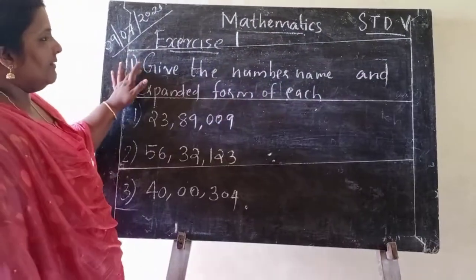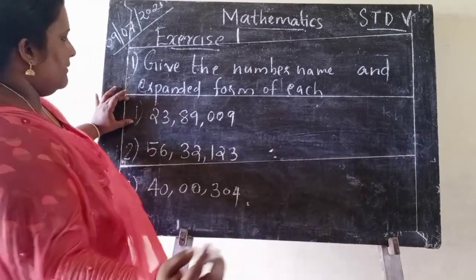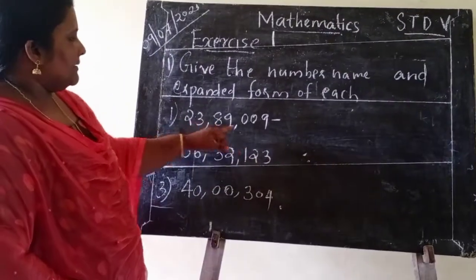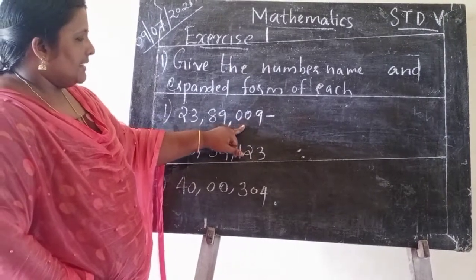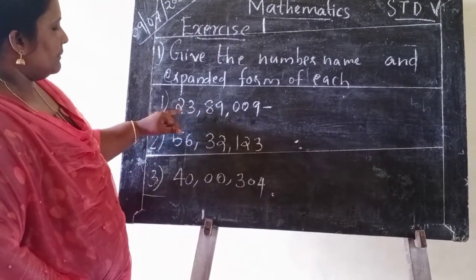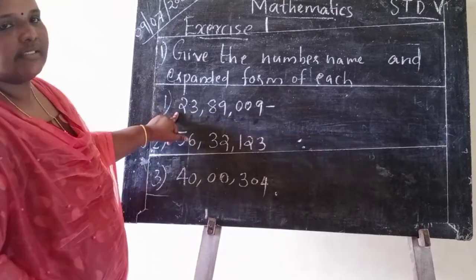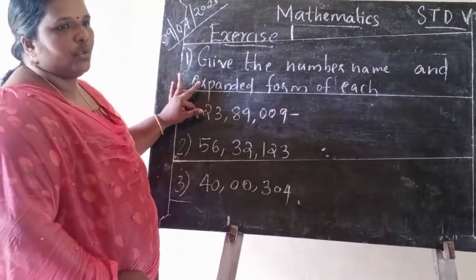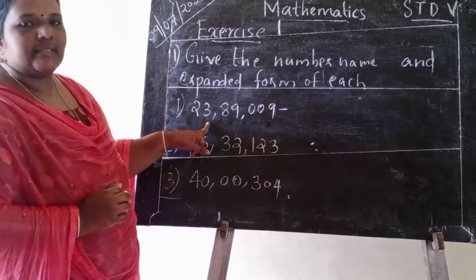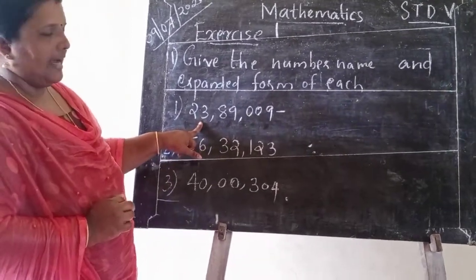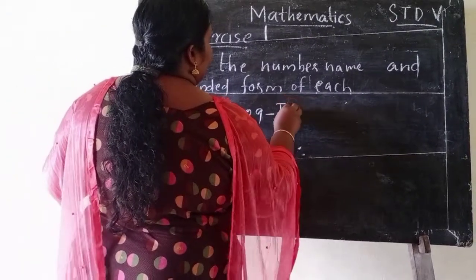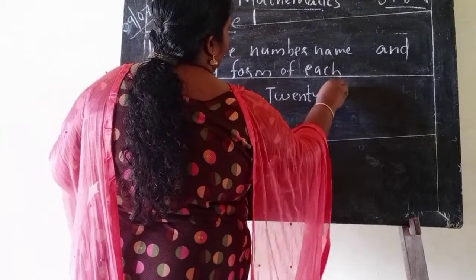The first question is done for you. For 23,89,009: 9 is in the ones place, 0 in tens, 0 in hundreds, 9 in thousands, 8 in ten-thousands, 3 in lakhs, and 2 in ten lakhs — that is 20 lakhs. 3 lakhs gives 23 lakhs. So we read this number as 23 lakhs 89,009.